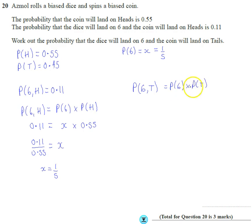And we now have both of these answers. The probability of getting a 6 is a fifth. The probability of getting a tails is 0.45.